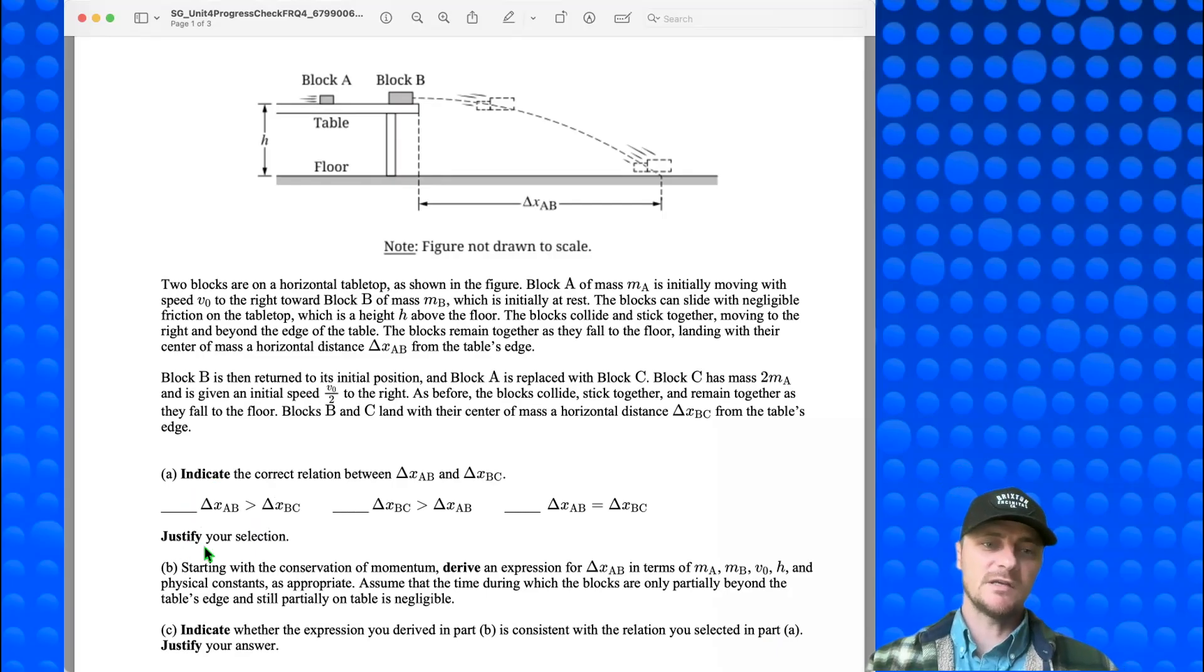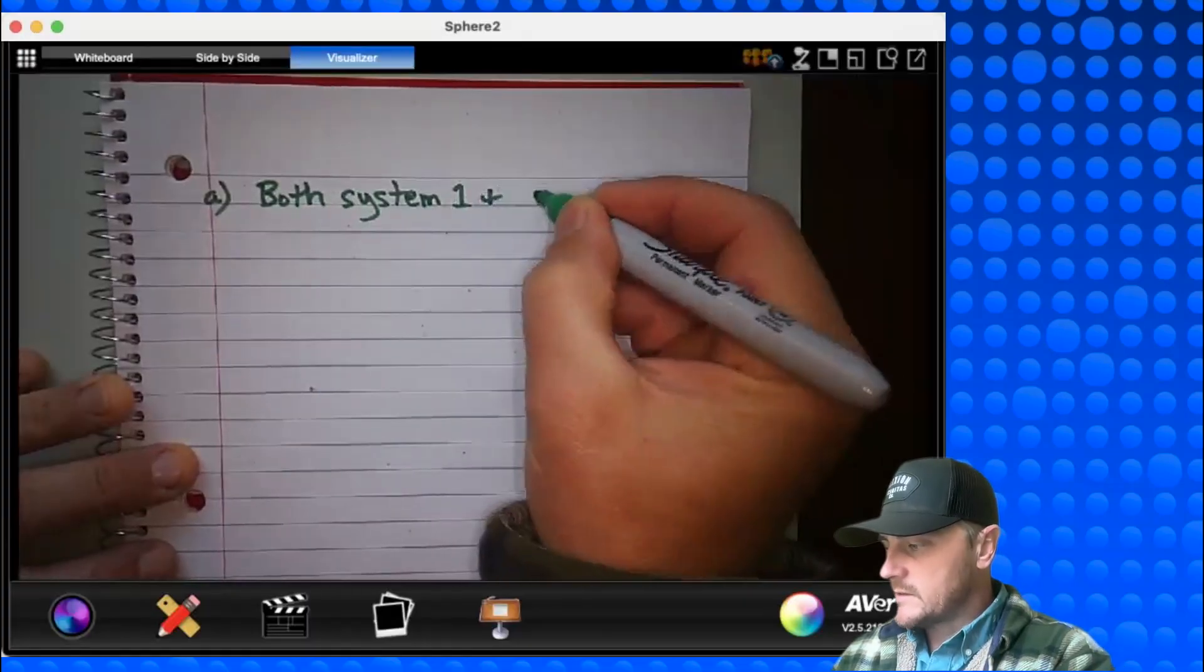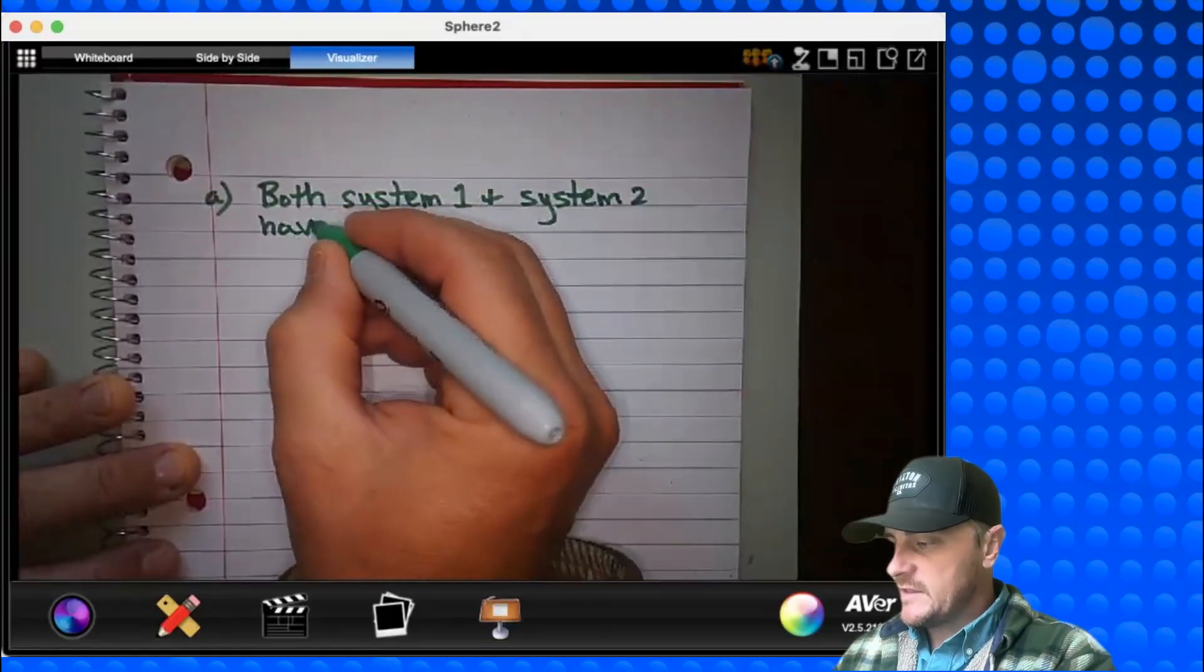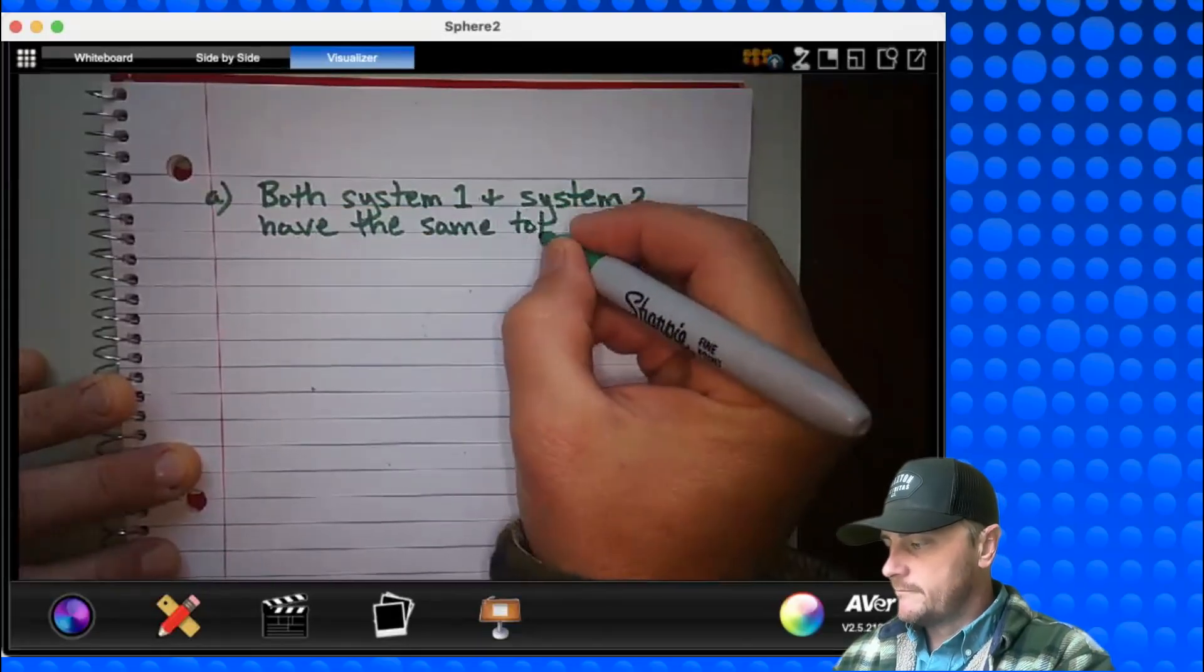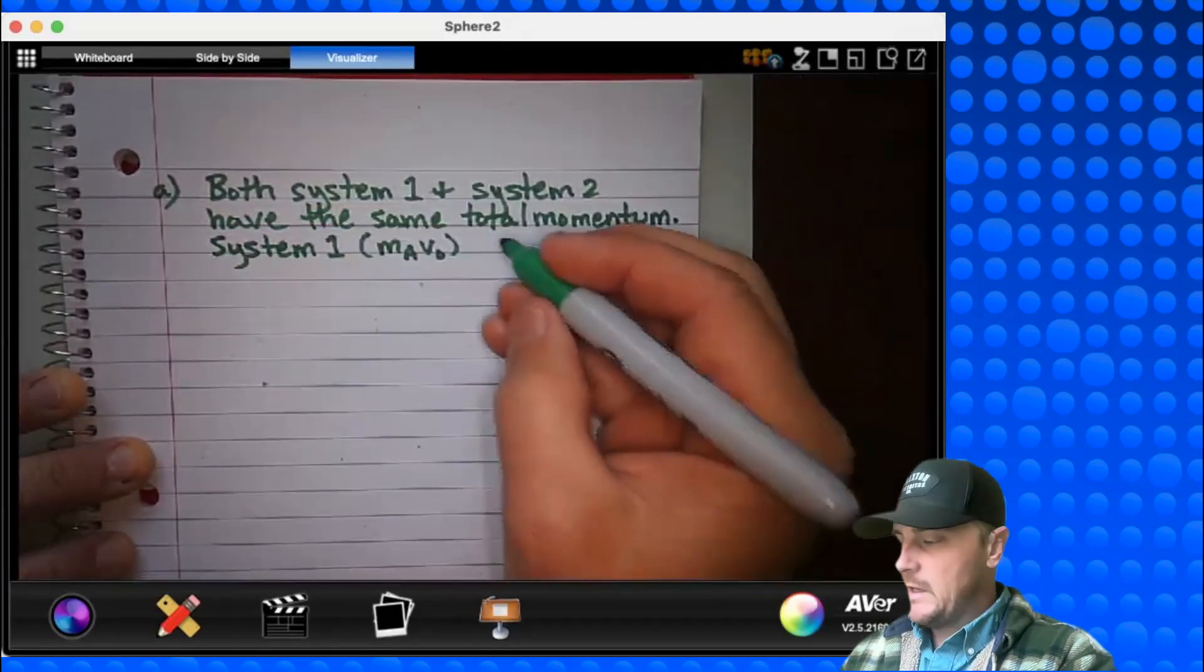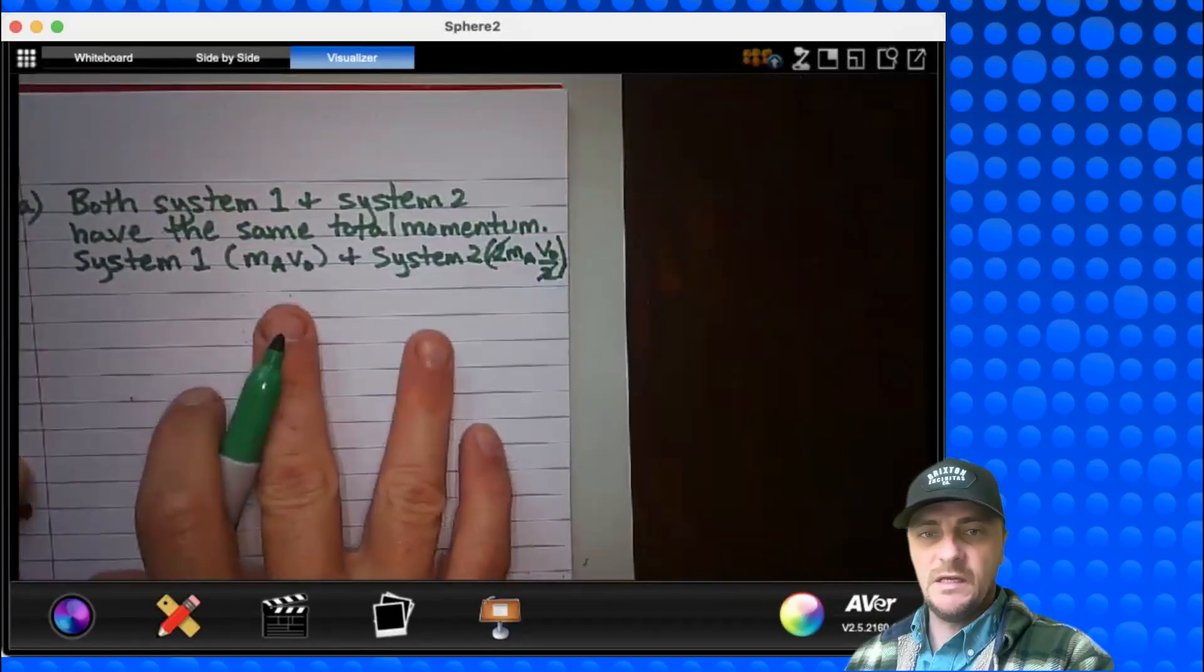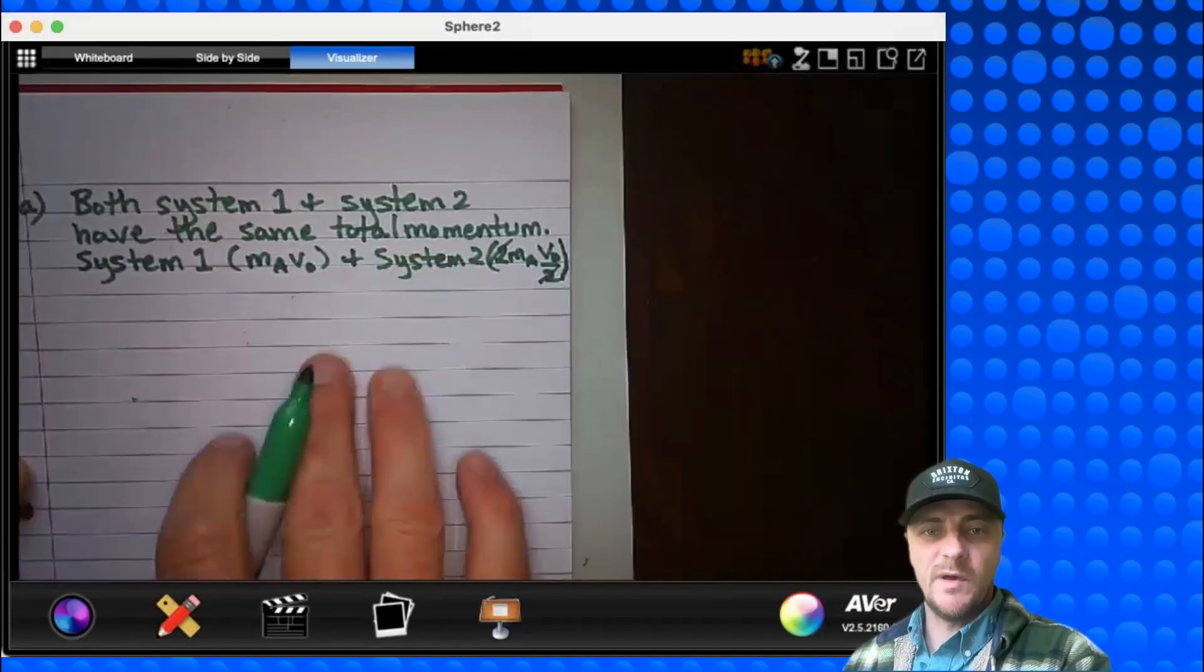Now let's get ready to write and justify our selection. Both system 1 and system 2 have the same total momentum. I'll put a quick proof here. System 1 and system 2. And these cross out, and they can see, okay, they understand that the momentums are equal.